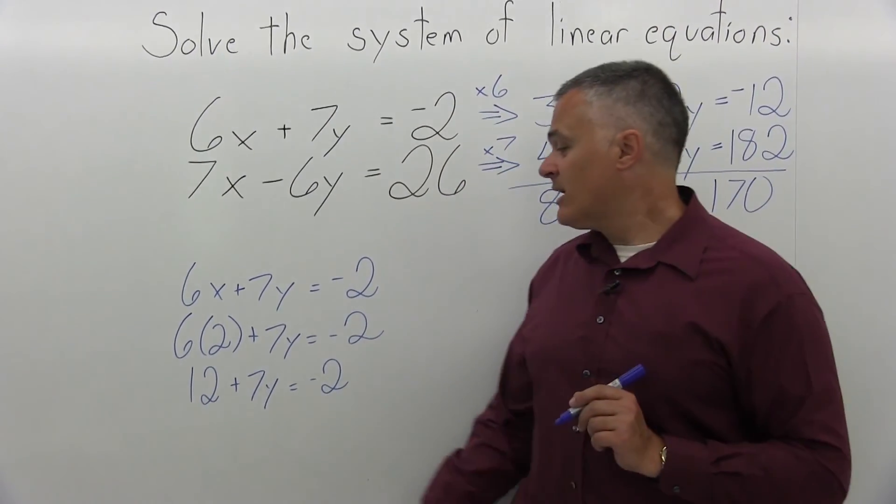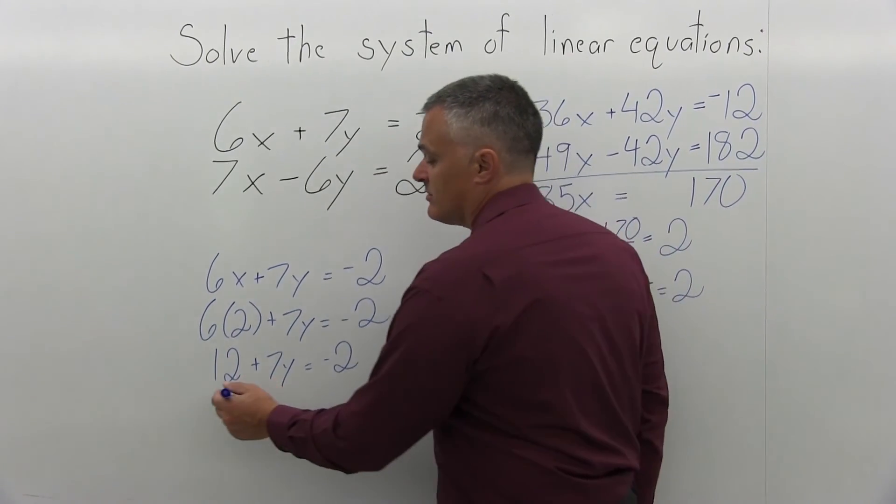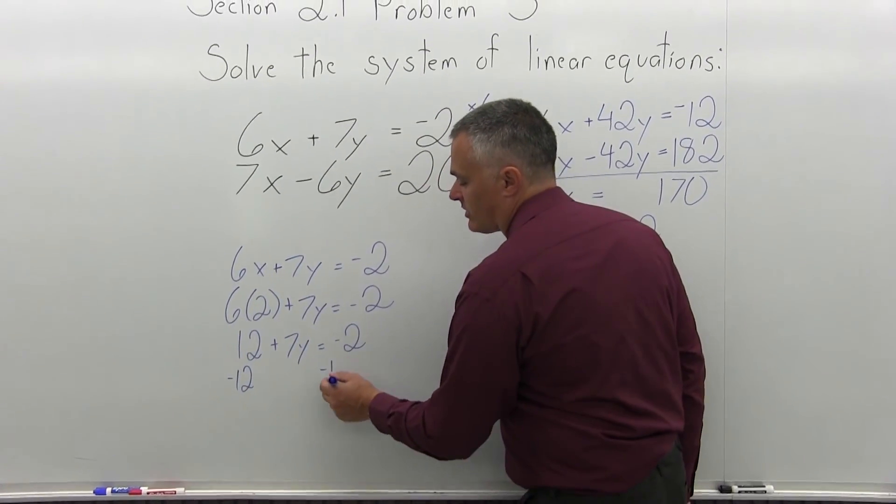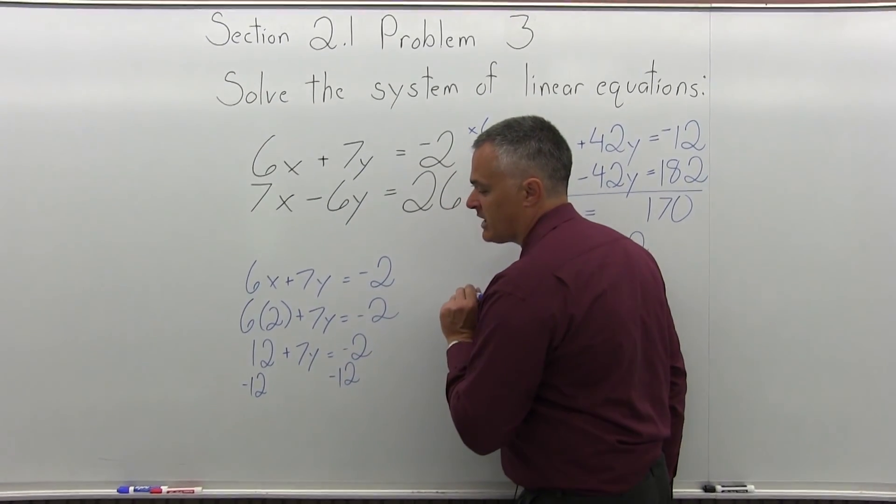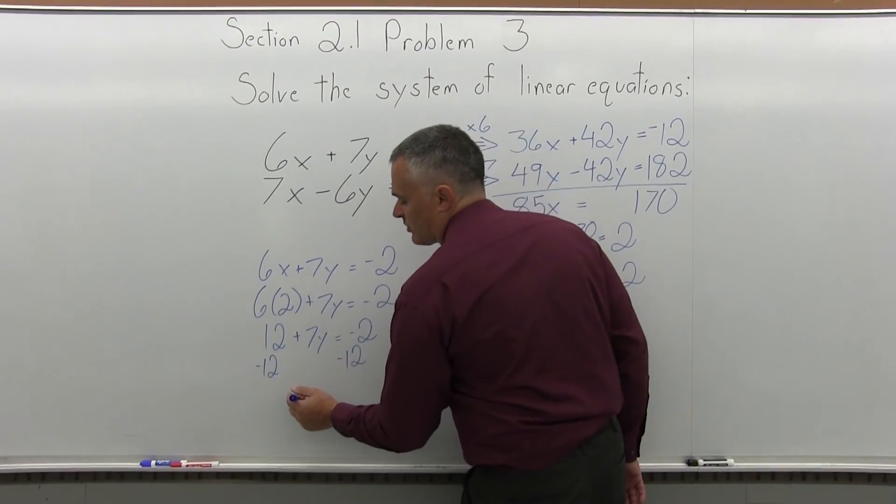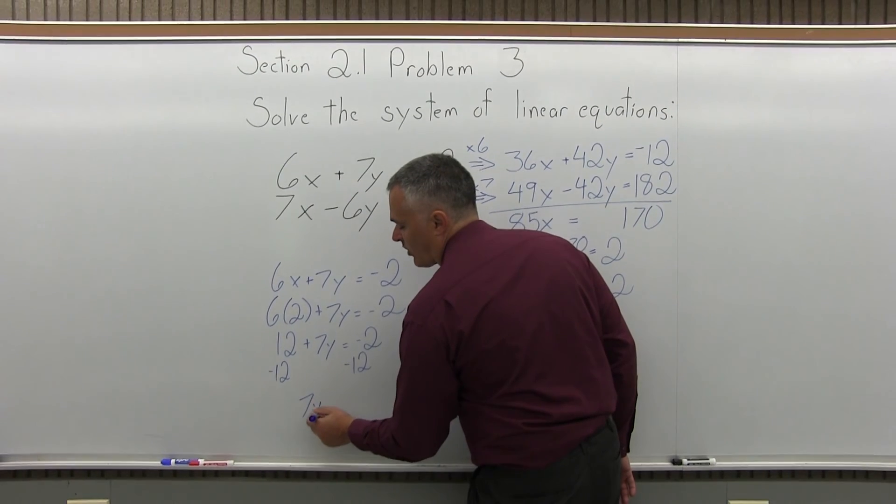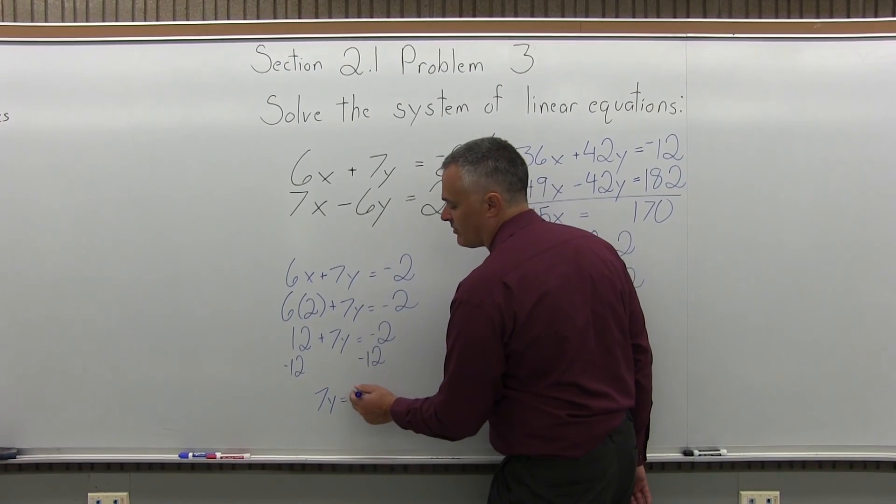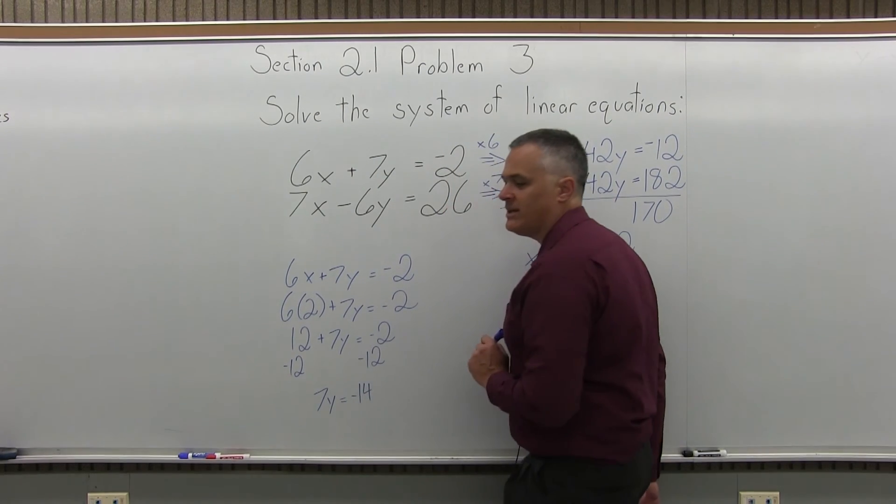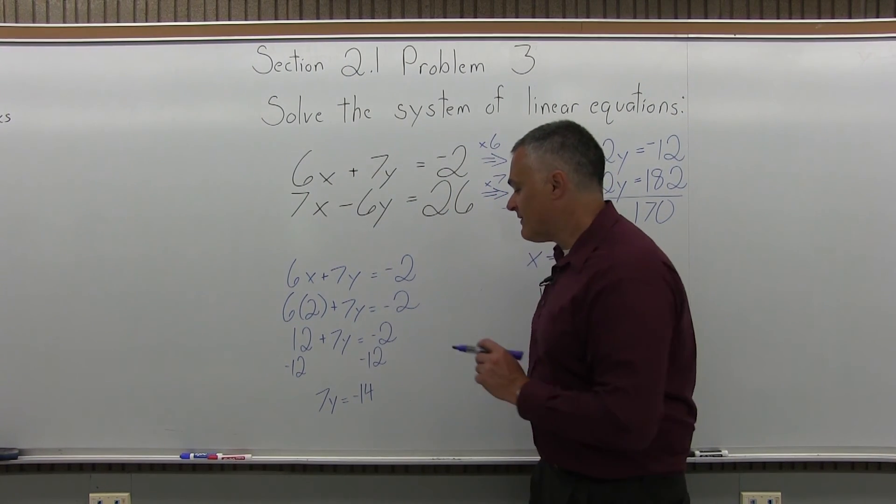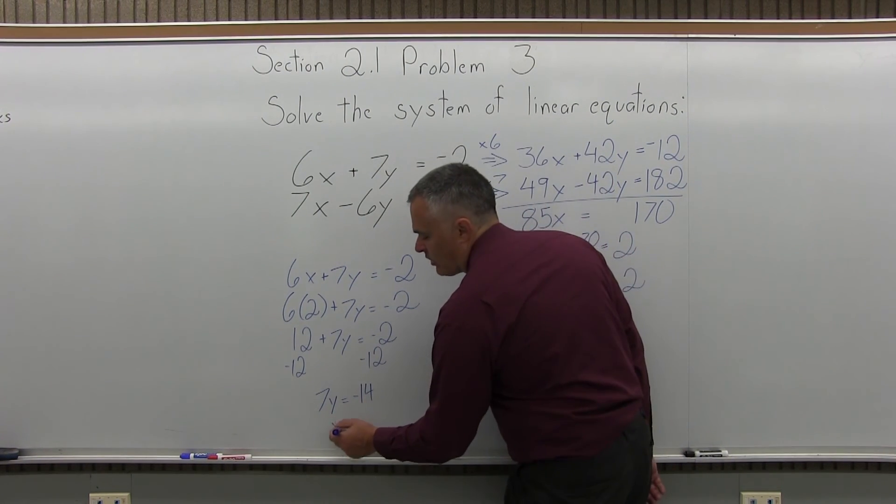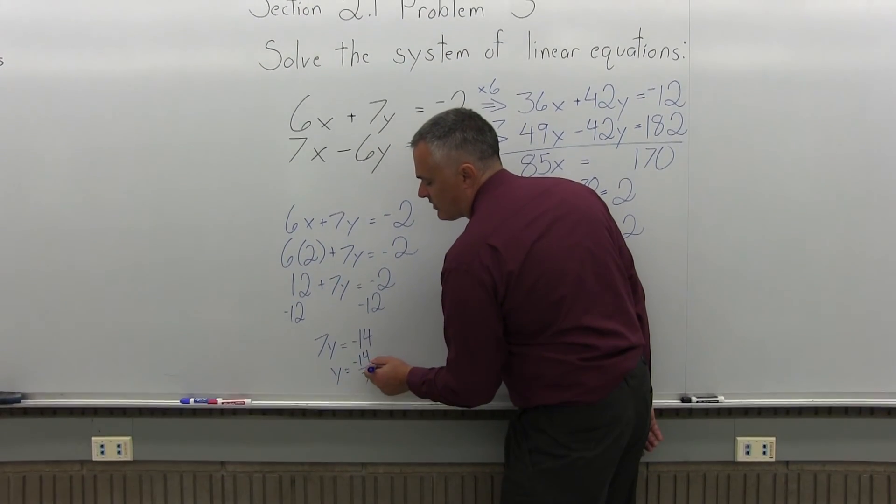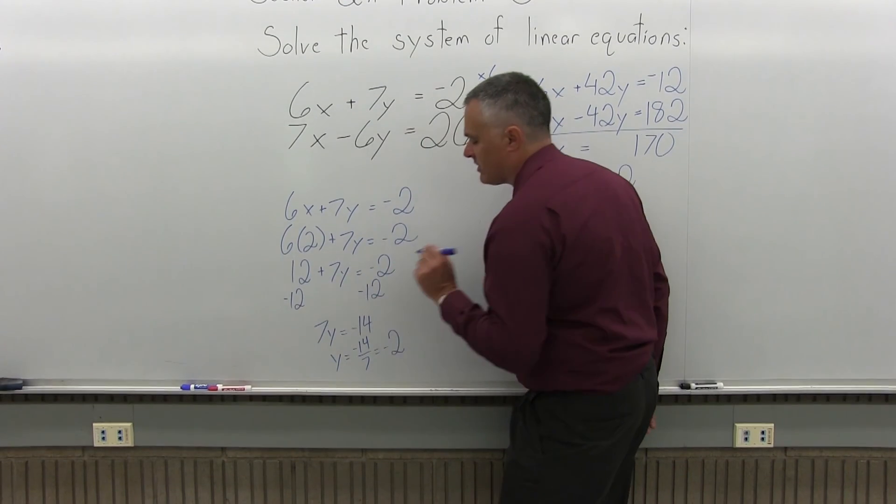Now, I need to get rid of the 12 on the left. So, I'm going to subtract 12 on the left side of my equation, and I will also subtract 12 on the right side of my equation. The 12s cancel. I have 7y equals negative 2 and negative 12 will be negative 14. Now if I divide the 7, y equals negative 14 over 7, y is negative 2.